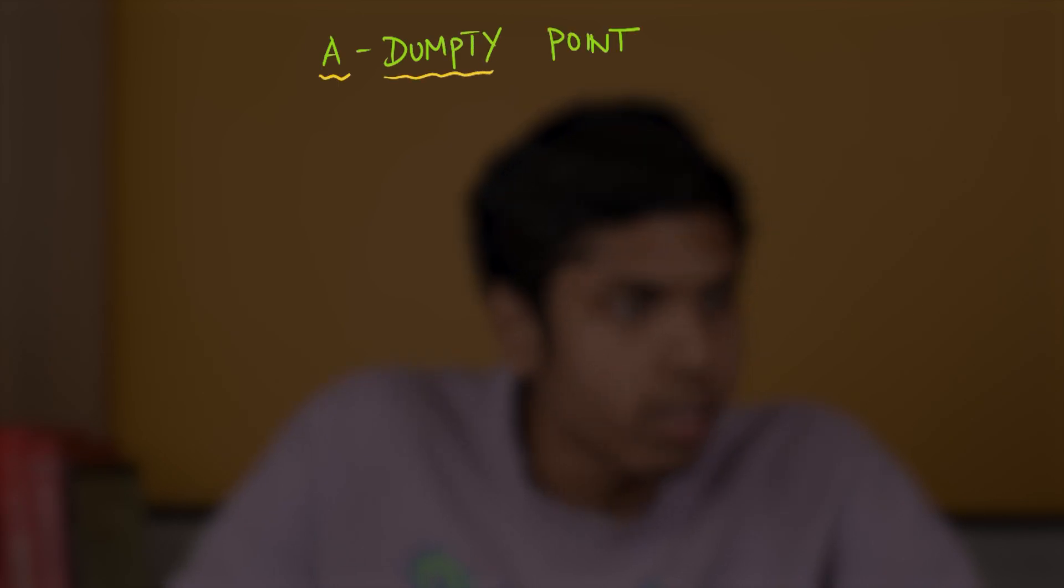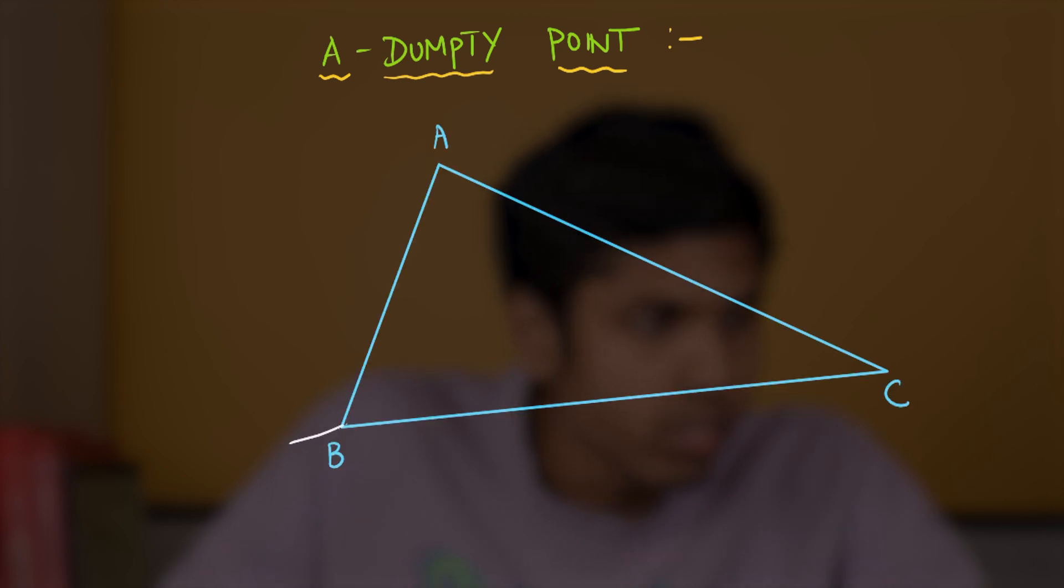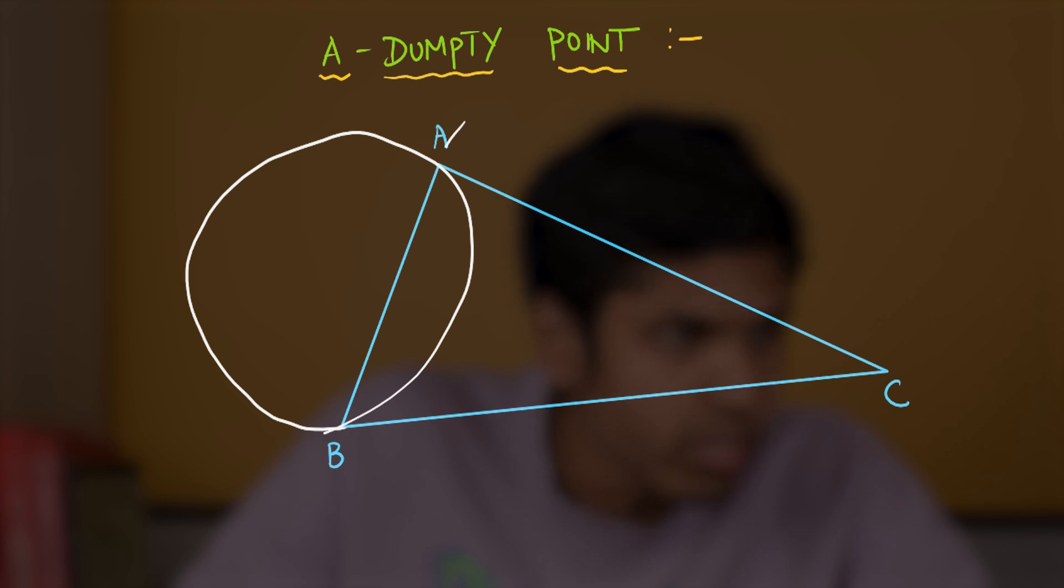Okay, now let's come to the definition. What is the A Dumpty Point? Well, let's consider a triangle ABC. Construct the circle tangent to AC at A and passing through B. So, it will look something like this. Similarly, construct the circle tangent to AB at A and passing through C.